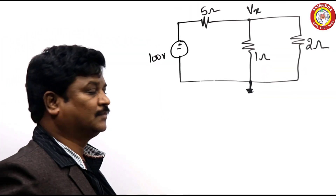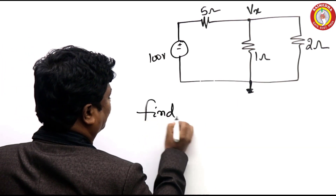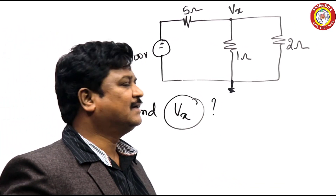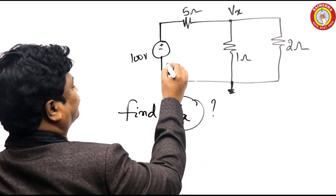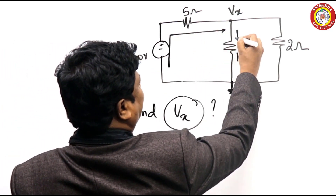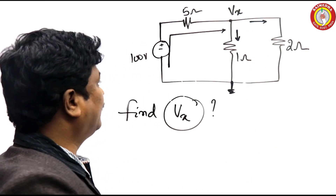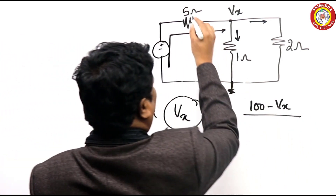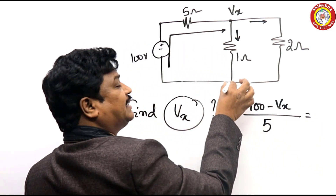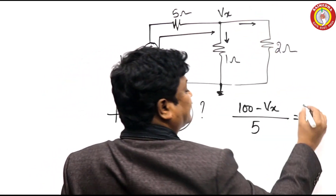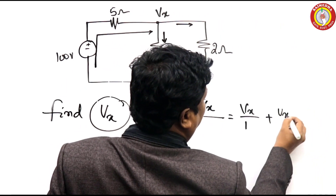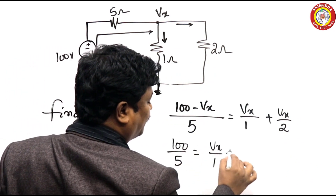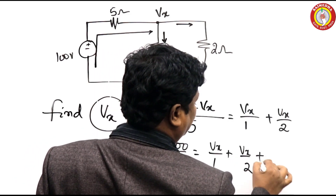This is the third model based on Kirchhoff's current law. In this problem, find Vx. We can apply nodal analysis, but we are simply talking about Kirchhoff's laws. Some current is flowing like this. What is the current here? (100 - Vx)/5 equals - this potential is 0, this is incoming current, outgoing currents are Vx/1 plus Vx/1 plus Vx/2. From this, 100/5 equals Vx/1 plus Vx/2 plus Vx/5.